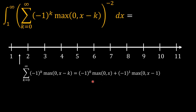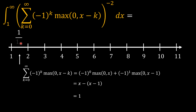So negative 1 to the power 0 is positive 1, and max(0, x) equals x for x in [1,2]. For k equals 1, x minus 1 is positive, but the sign is negative 1, giving minus (x minus 1). The summation becomes x minus (x minus 1), which equals 1. Therefore the integrand, being the inverse square of 1, is 1 over 1 squared in the interval from 1 to 2.